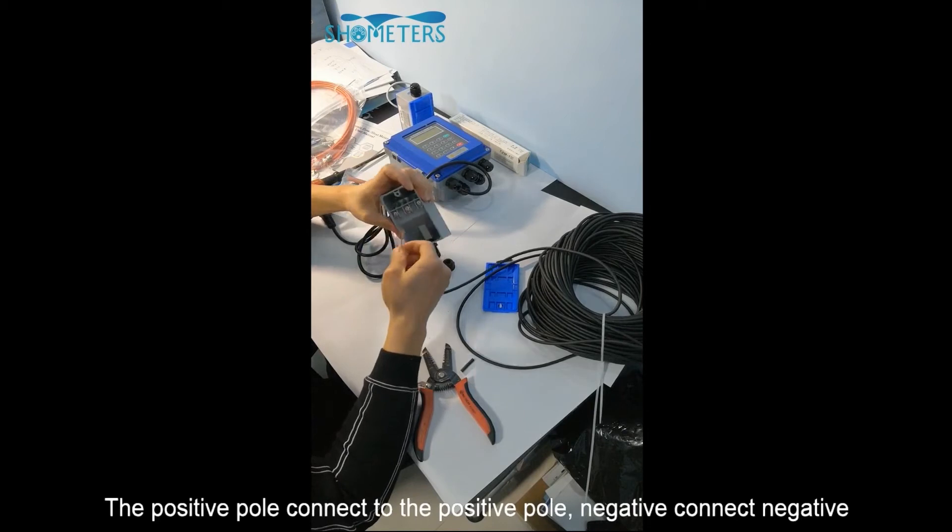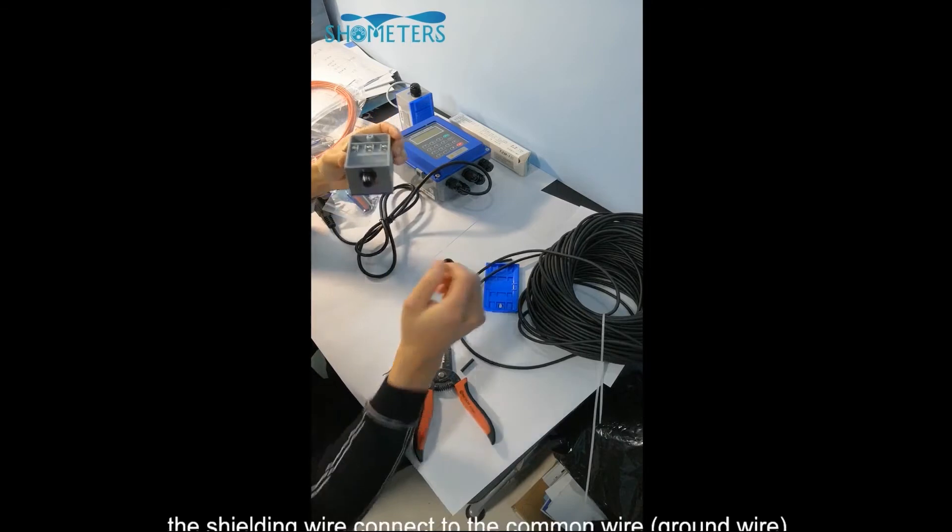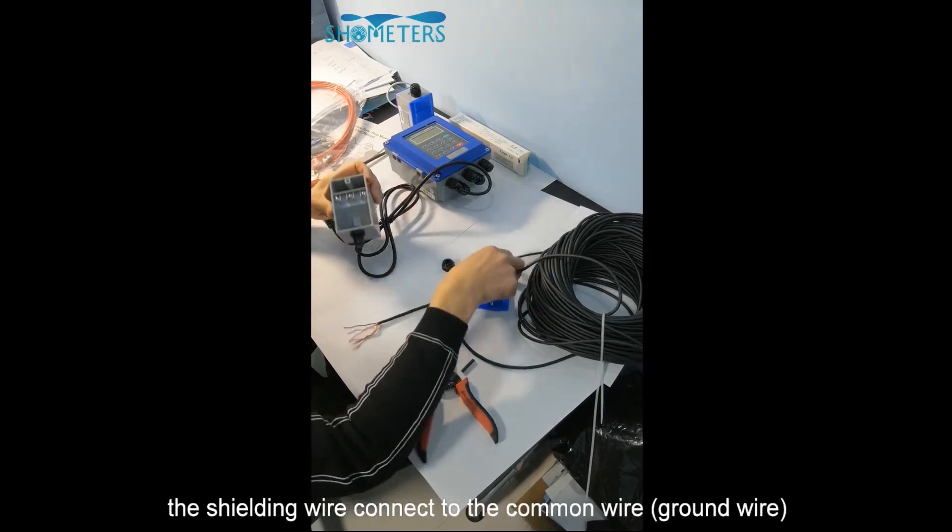The positive pole connects to the positive pole. Negative connects to negative. The shielding wire connects to the common wire.